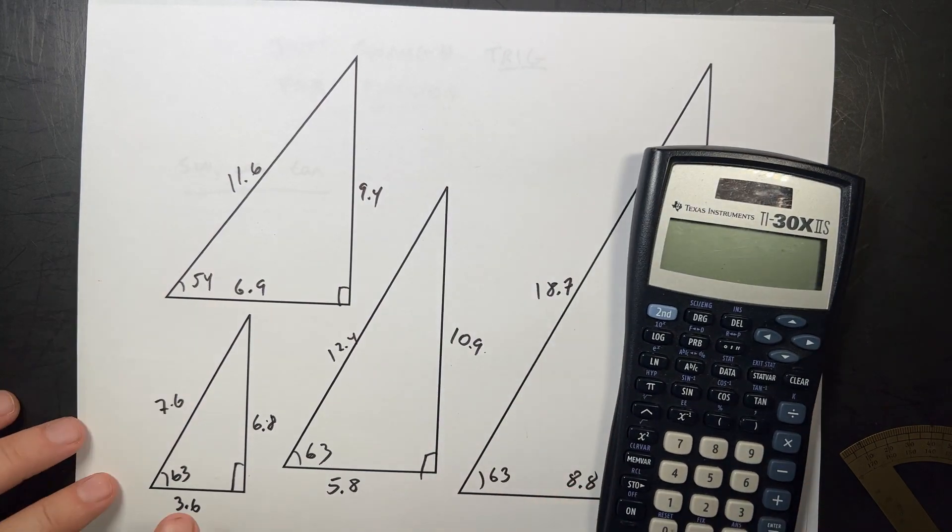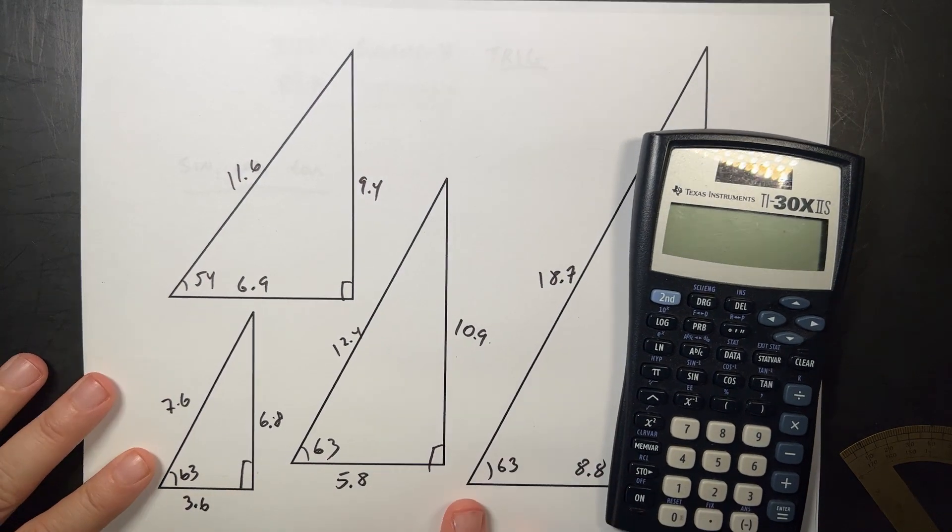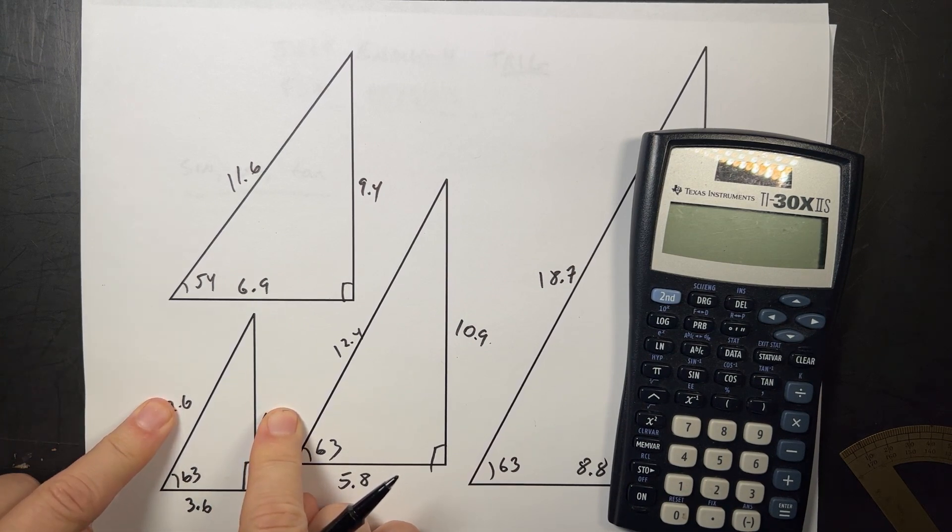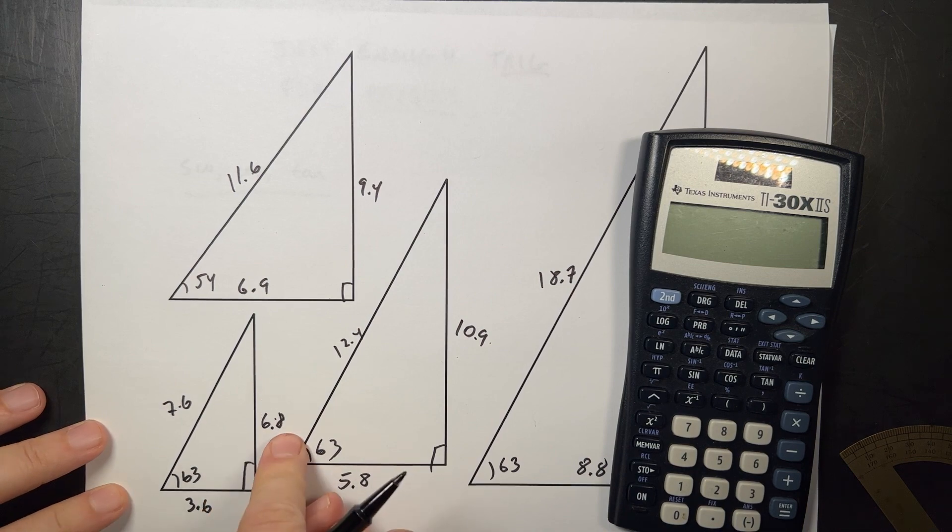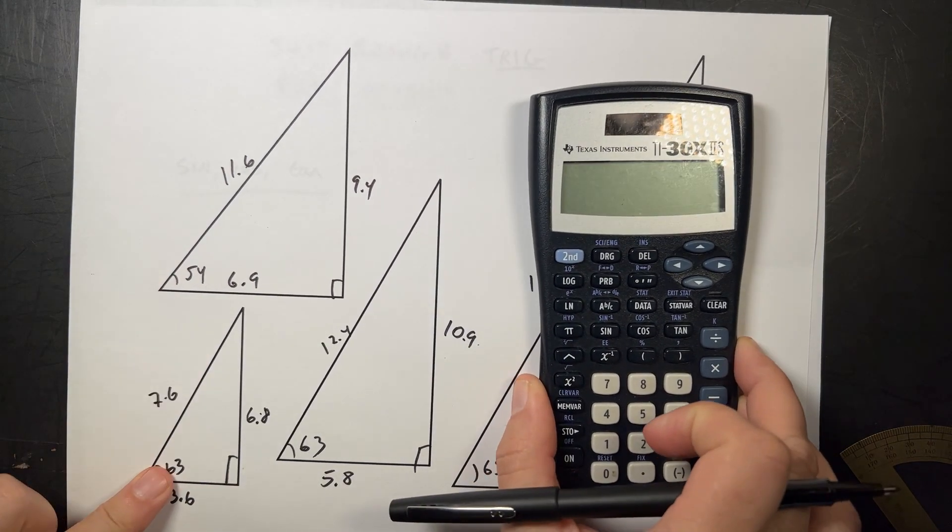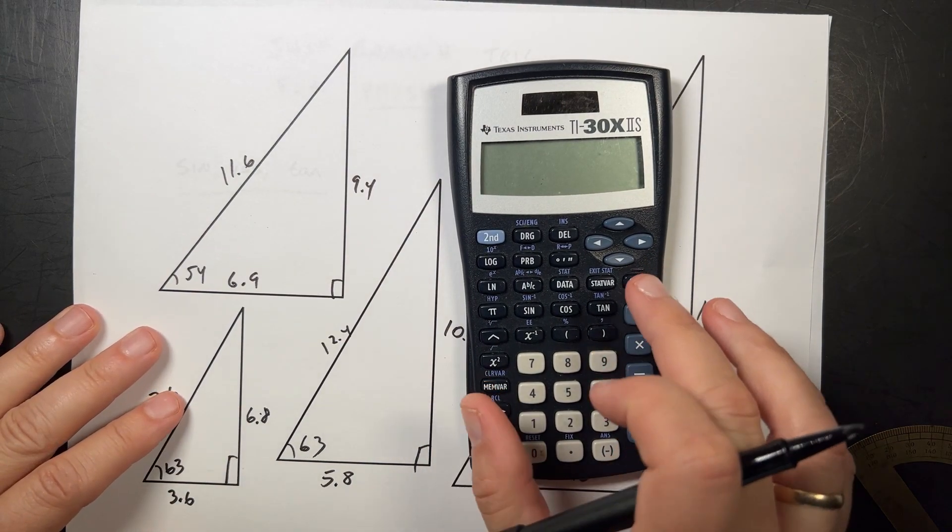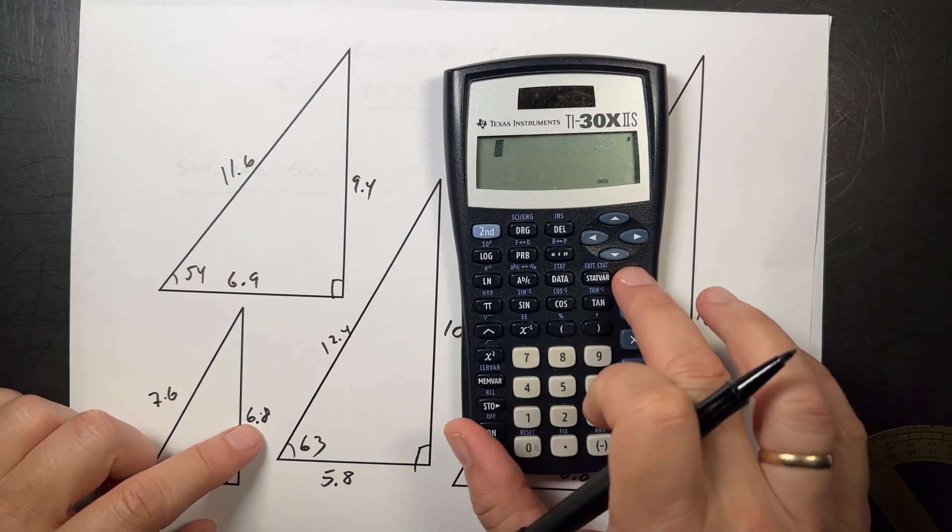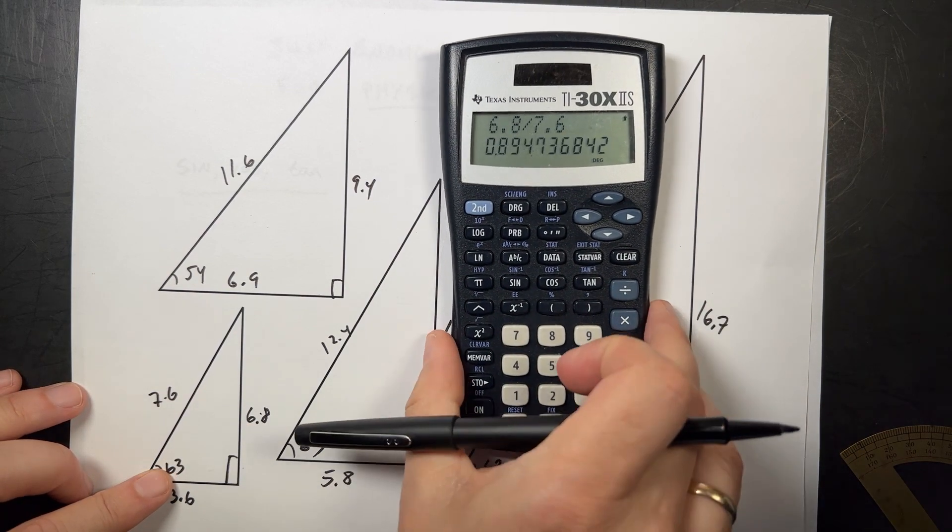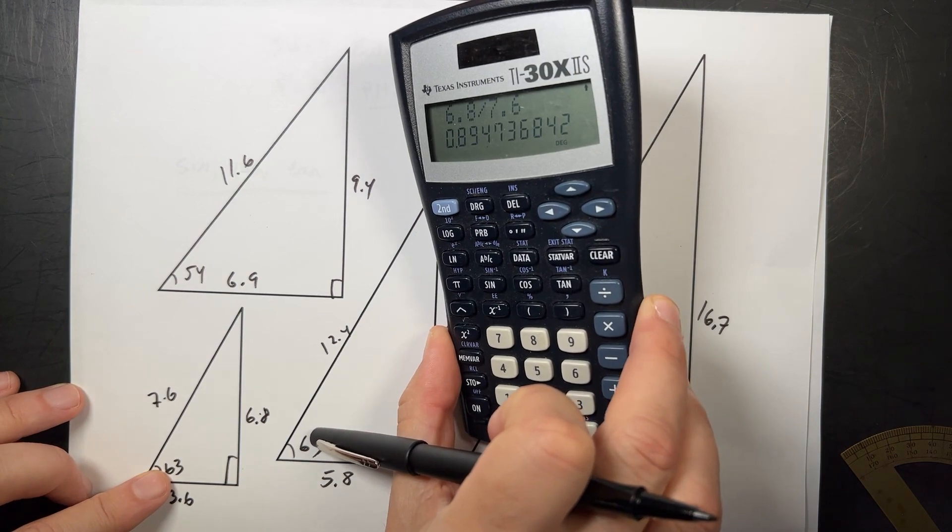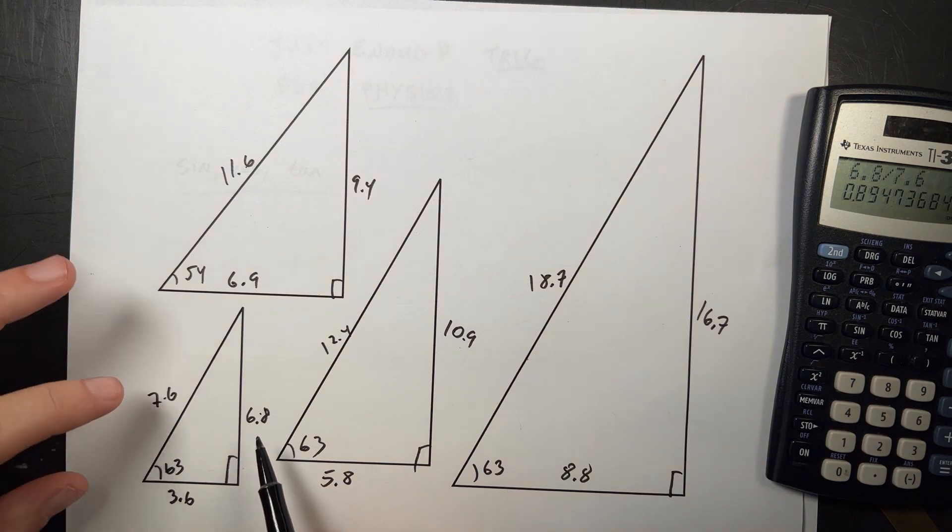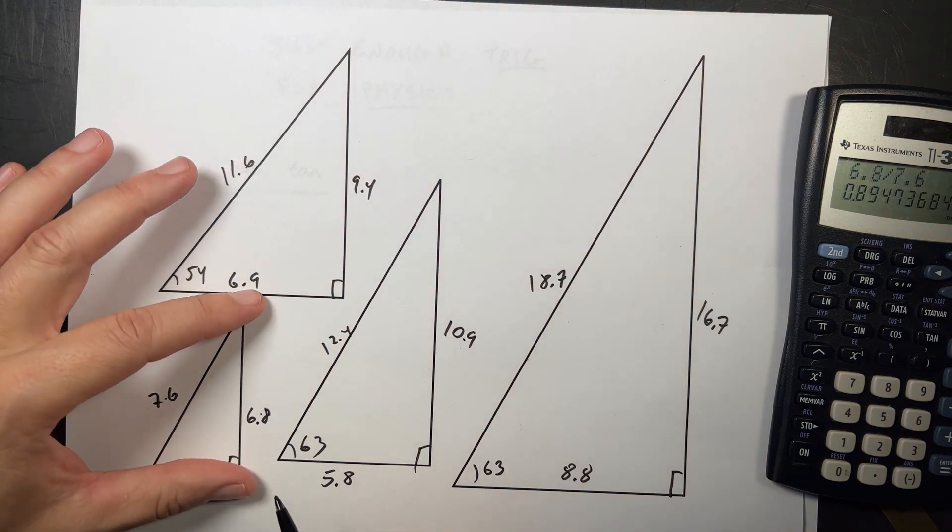Calculator. Suppose I look at this angle and I label that as the opposite side and that is the hypotenuse. Let's take the ratio of opposite divided by hypotenuse. I'm going to do it for all of these triangles. Opposite divided by hypotenuse. 6.8 divided by 7.6 equals 0.89. And you'll notice that it has to be less than 1, because the hypotenuse has to be longer than that length. It has to be, because that's the right triangle.